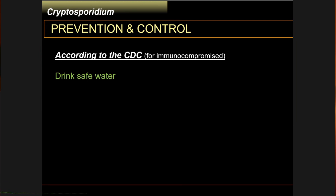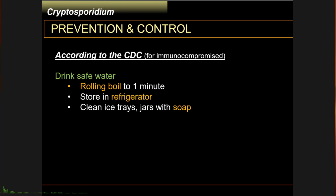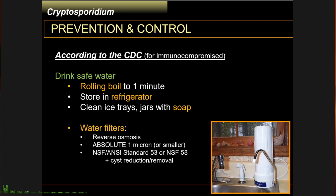To ensure you are drinking safe water, according to the CDC: practice a rolling boil for one minute, making sure the water bubbles up fully. Store unused water in the refrigerator and always clean your ice trays and water jars with soap and clean water regularly. Regarding water filters, make sure they have at least one of these recommended specifications: reverse osmosis, absolute one micron or smaller, ANSI standard 53, or NSF 58 plus cyst removal or reduction.